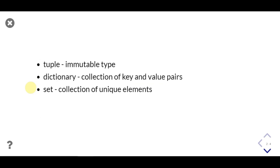Next we have tuple, which is the same as a list but immutable — that means we can't change individual elements. Dictionary is a really powerful data type present in Python; it is a collection of key-value pairs. Then comes set — it is a collection of unique elements and can be used to find unique elements from any sequence.